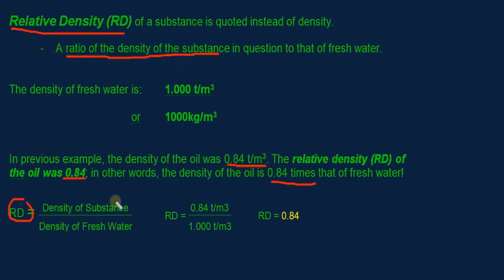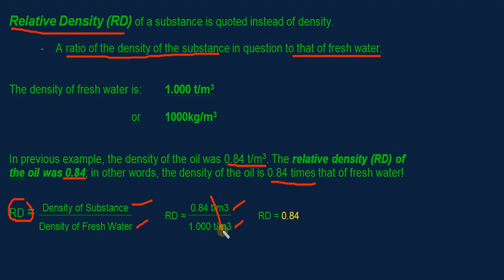To find relative density, we divide the density of the substance by the density of fresh water. Relative density equals 0.84 tons per cubic meter divided by 1.0 tons per cubic meter. Both units cancel, and any number divided by 1 remains the same, so the relative density is 0.84. In short, to find the relative density of any liquid, just remove the unit from the density value — the remaining figure is your relative density. That's all guys, I hope you learned something in this video.